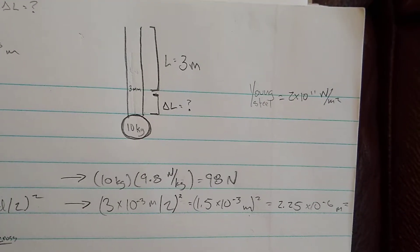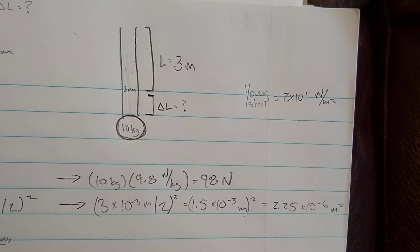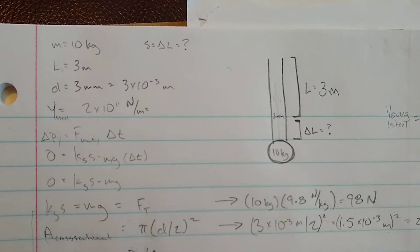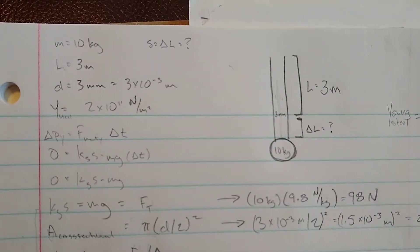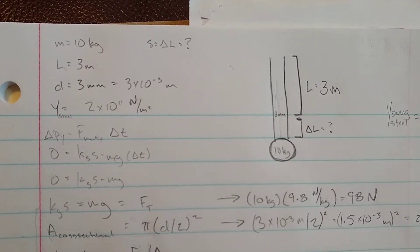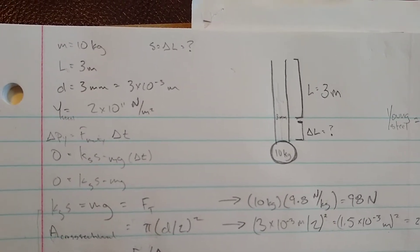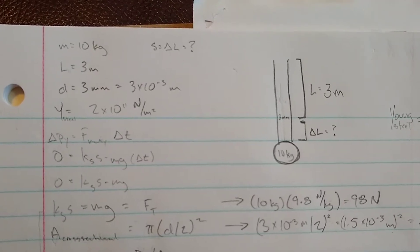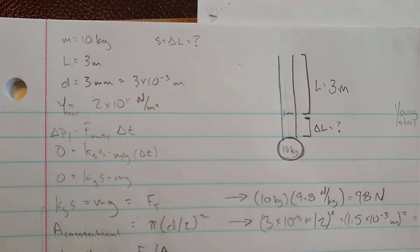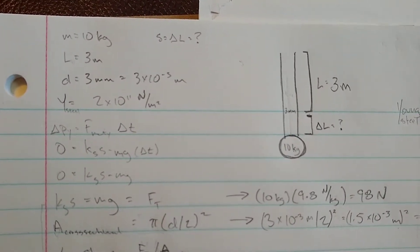We're given Young's Modulus for steel, which is fairly large, 2 times 10 to 11 newtons per meter squared. We have our mass, and we treat the difference in length like stretch. The length is 3 meters. The diameter is 3 millimeters, which is 3 times 10 to the negative 3rd meters.